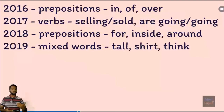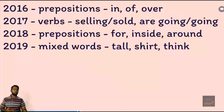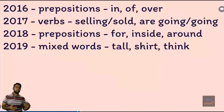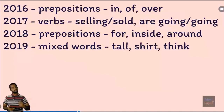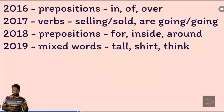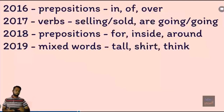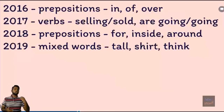In 2018, it was again rotated back to prepositions. But this time they used words like: for, above, inside, around — these sort of words. And again in 2019, it was a sort of mixed words. For example: tall, shirt, think.